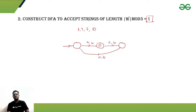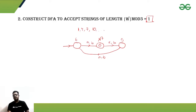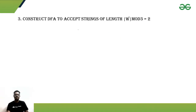From there we get a loop: length 4 is accepted again, then length 5, then 6 (not accepted), then 7 (accepted), and so on. We accept all strings where dividing the length by 3 gives a remainder of 1. This is the corresponding DFA.